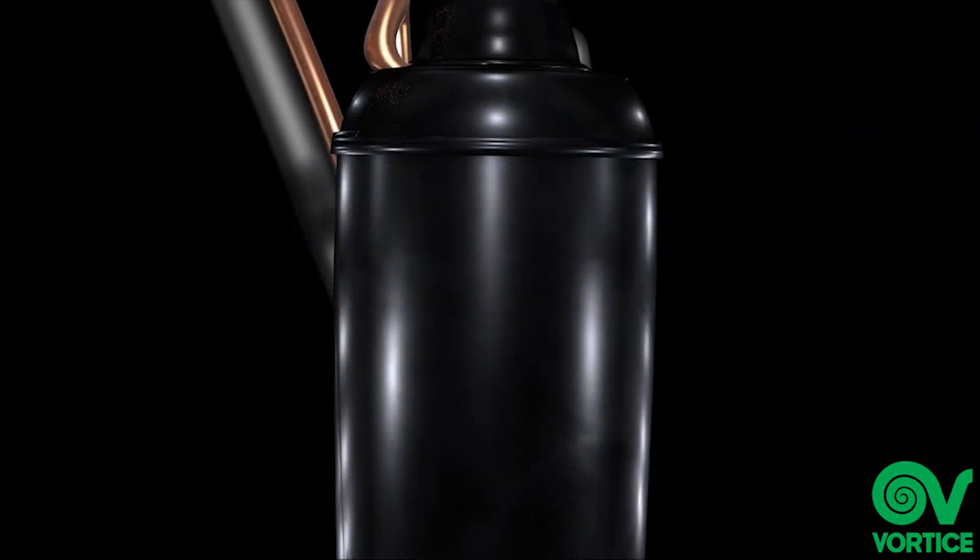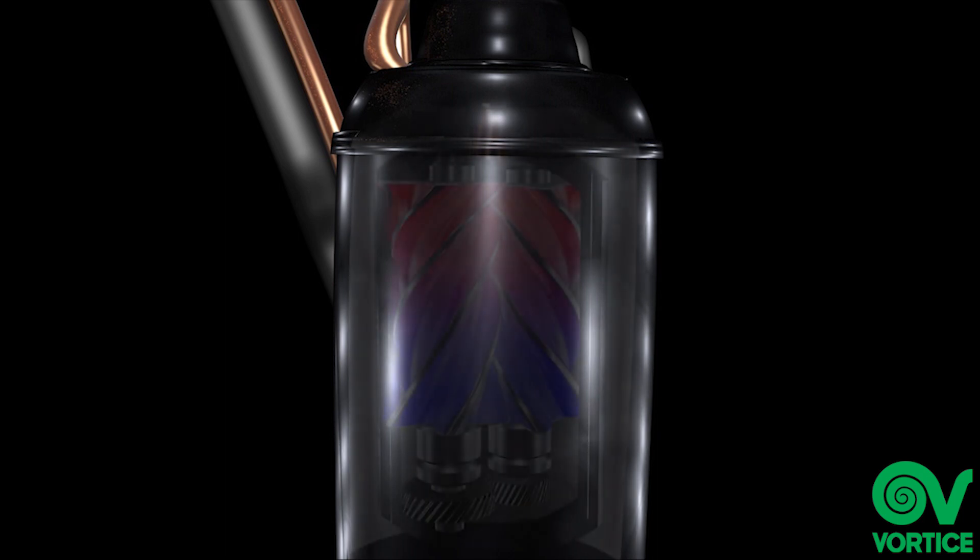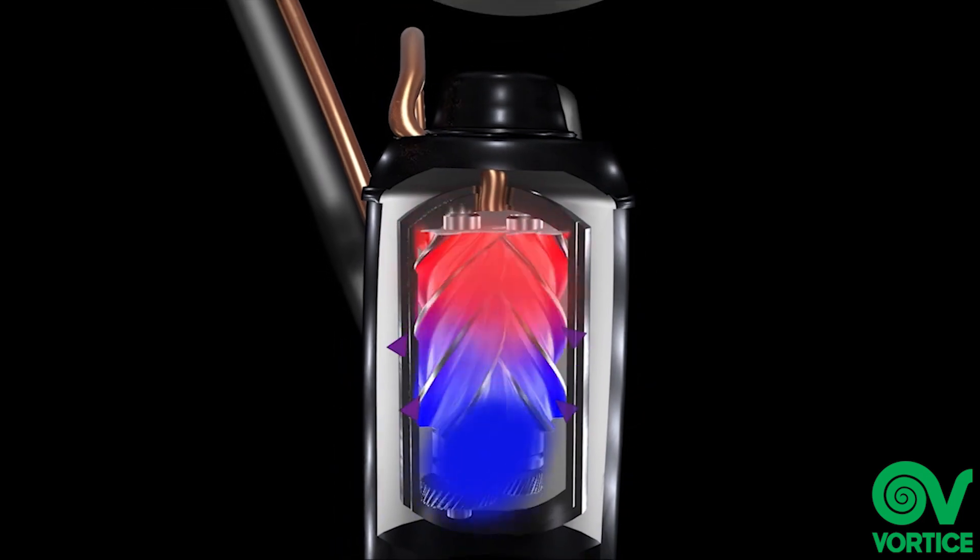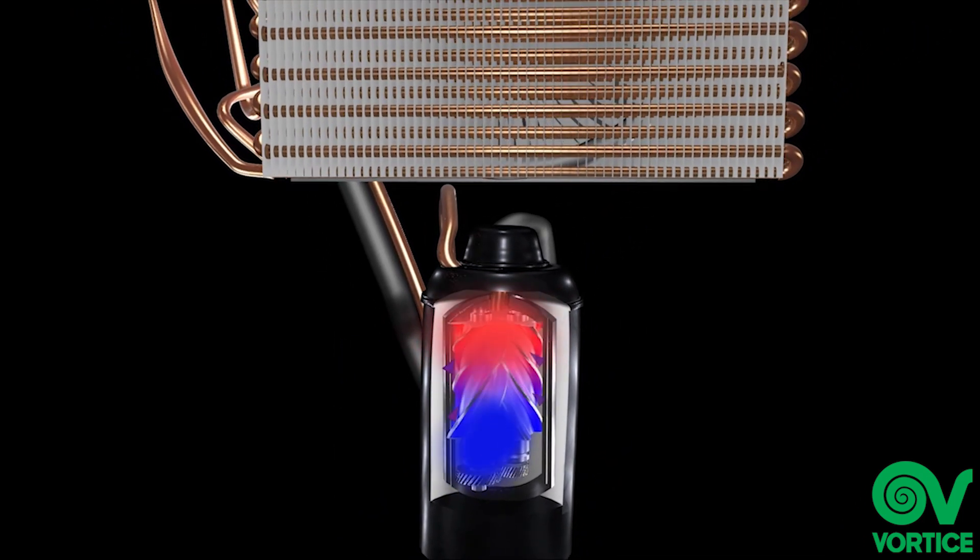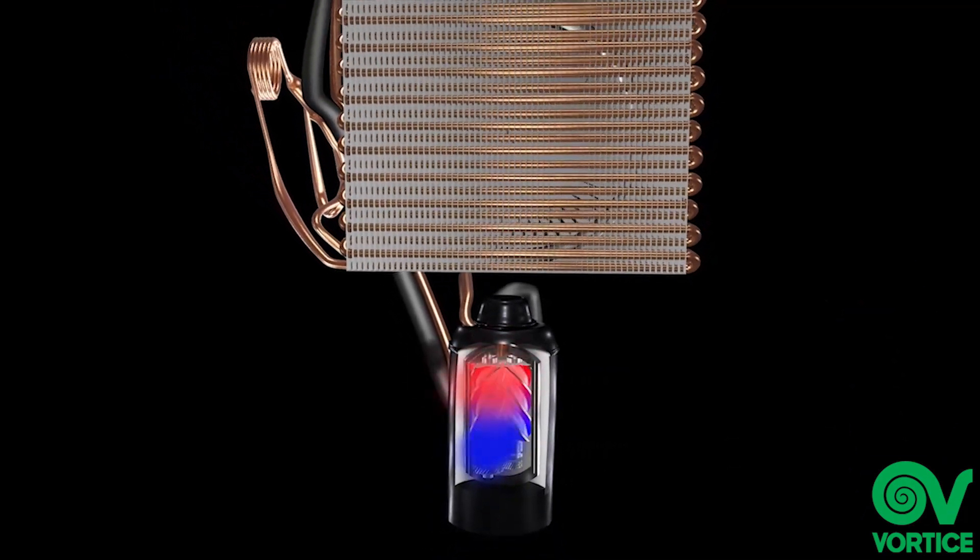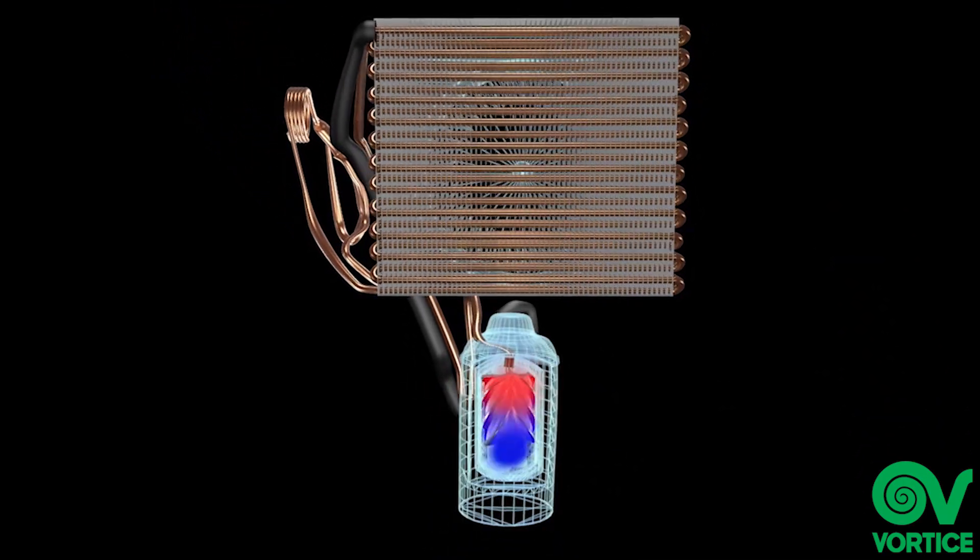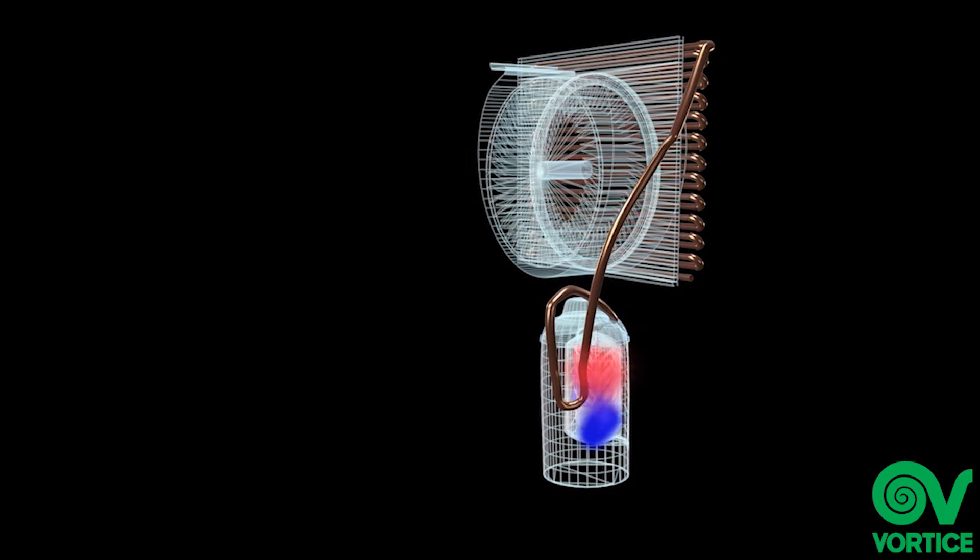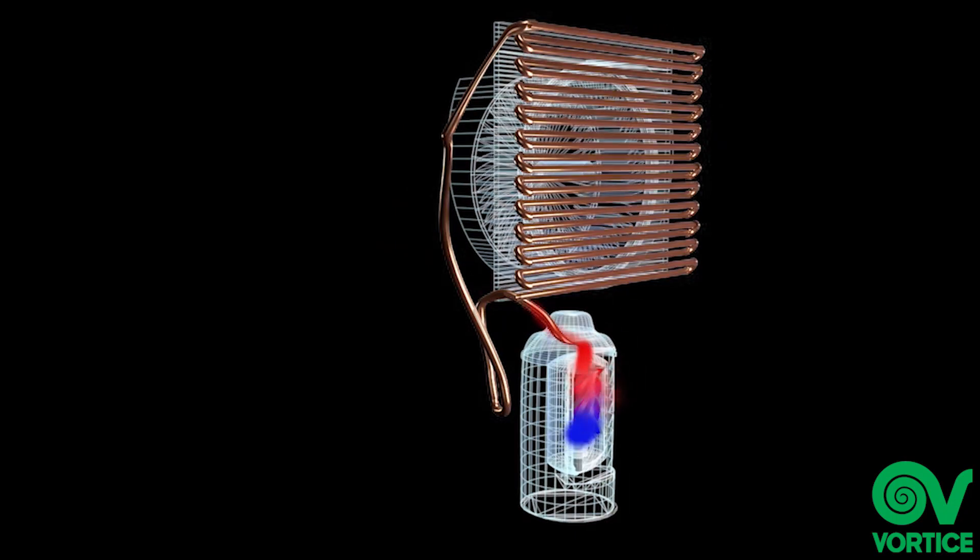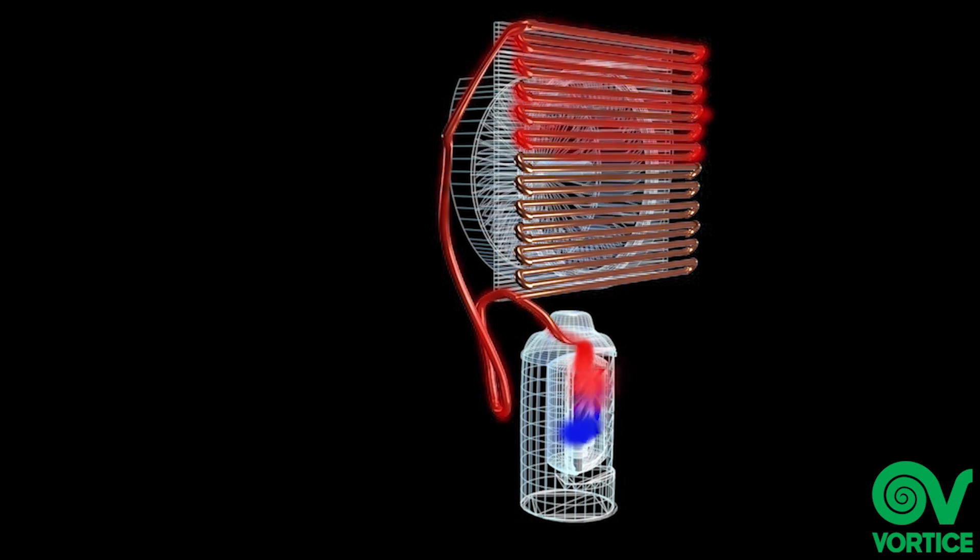The Dehumido M20 from Vortice utilizes a high-efficiency rotary compressor which compresses the refrigerant gas thanks to two helical rotors. Due to the compression generated, the gas heats up to approximately 65 degrees and flows in its gas form through the condenser unit at high pressure, turning it into liquid.